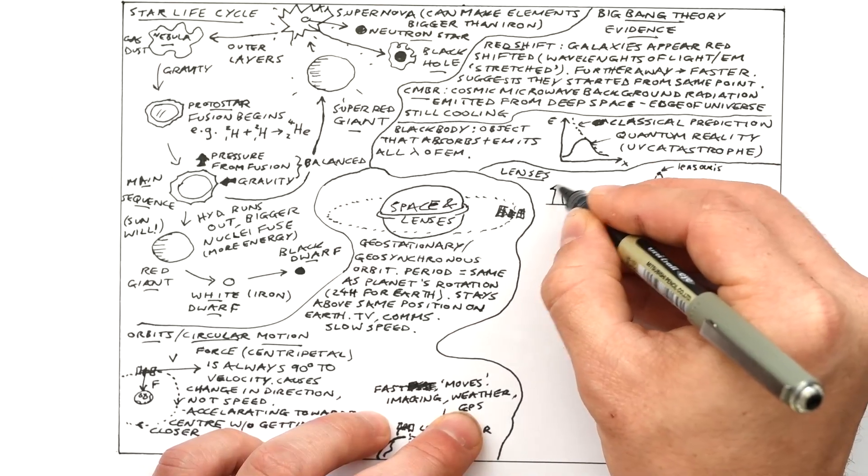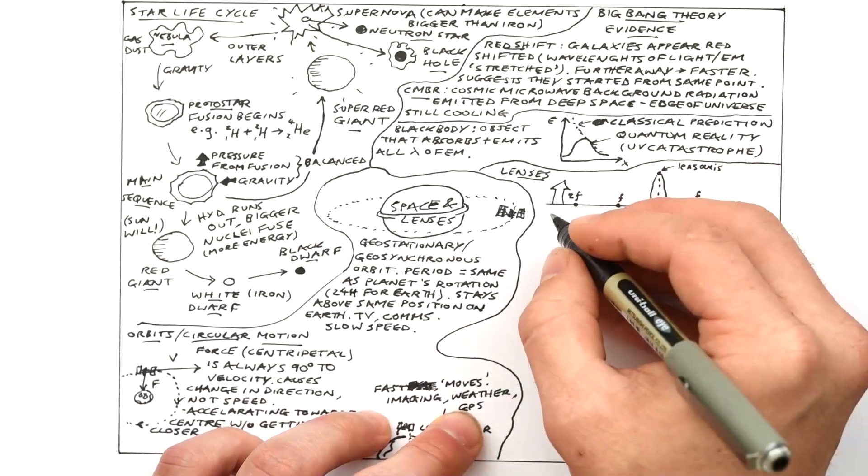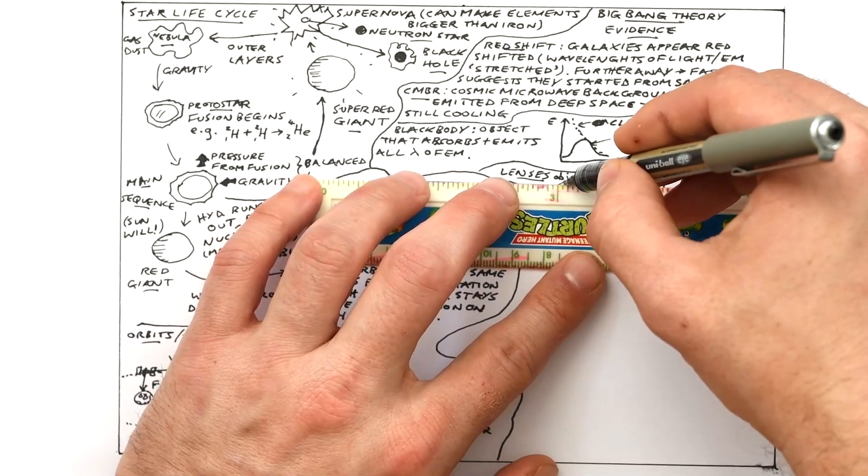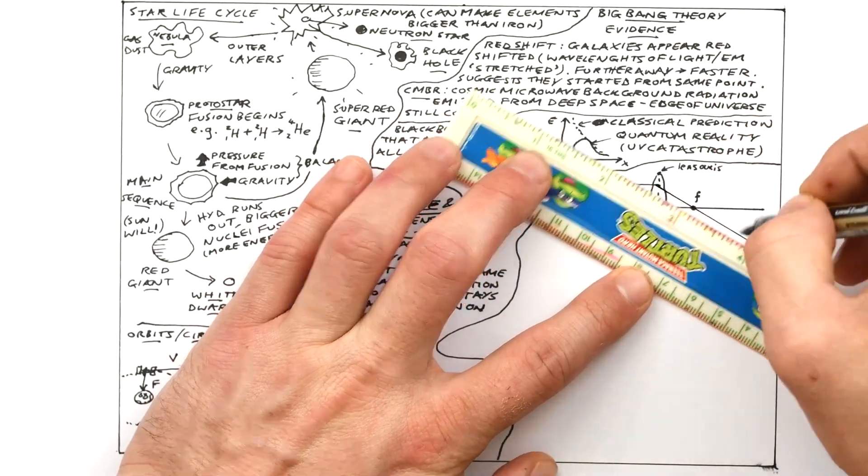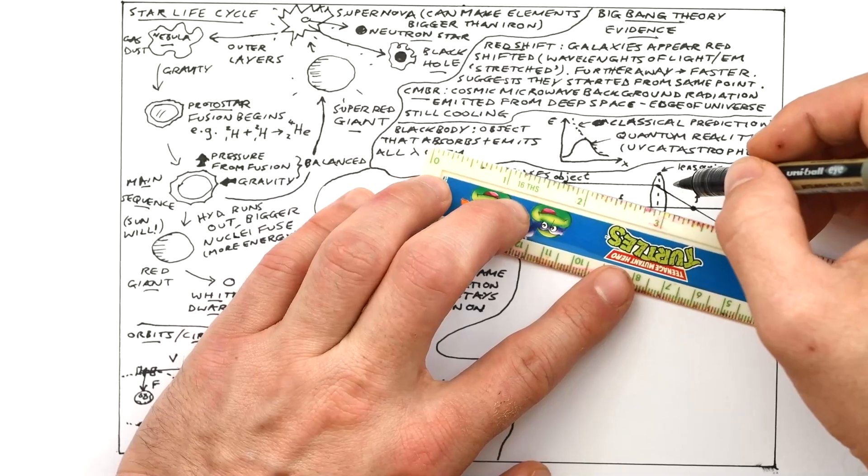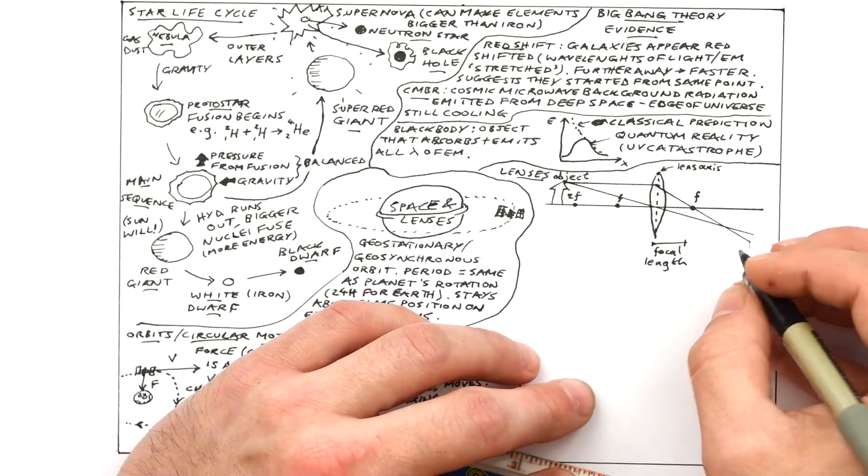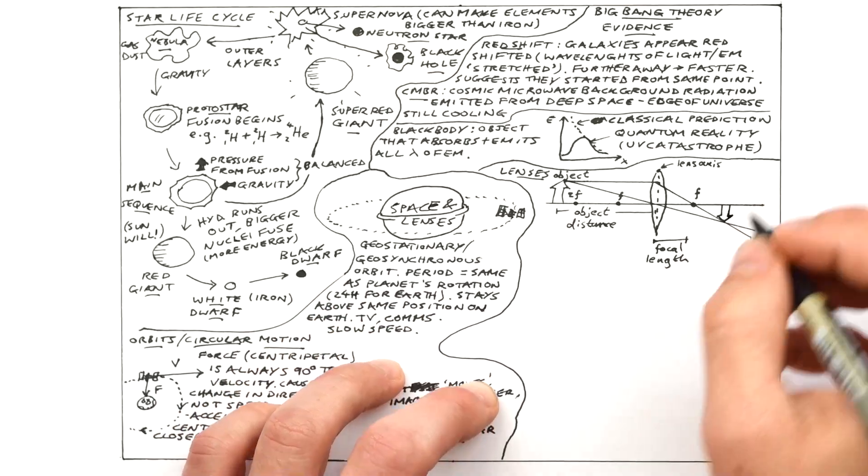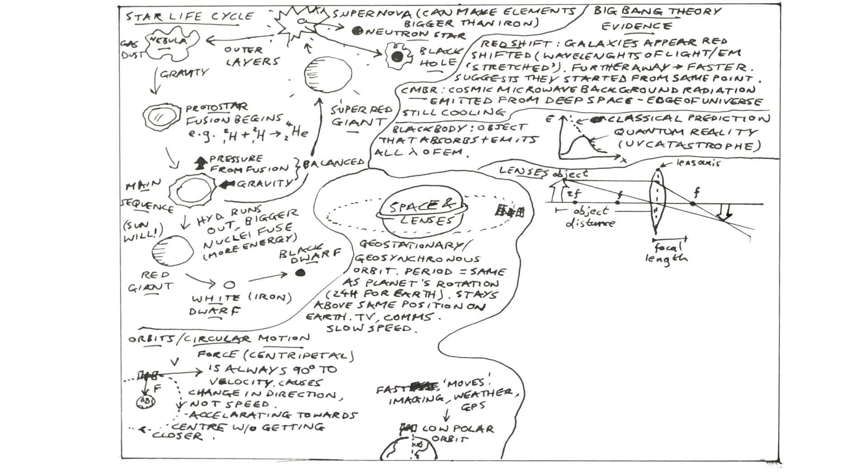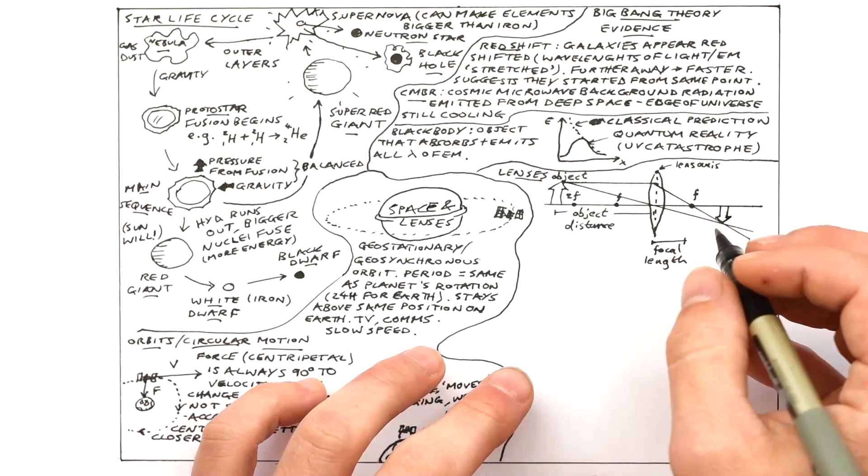Now in order to find out where an image is formed what we do is draw two rays from the top of the object. Some people say draw three but you only need two in reality. So what you do is draw one that goes parallel to the principal axis into the lens and then that goes through the principal focus. Then your second ray just goes straight through the center of the lens and then where those two meet up that's where the image of the top of the object is going to be formed. So this is what the image of the arrow is going to look like. This is how big it is. Now we have F on the object side of the lens and also double that length, 2F as well. Very important.